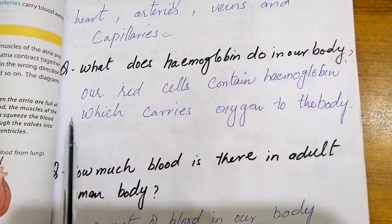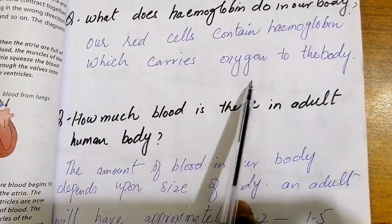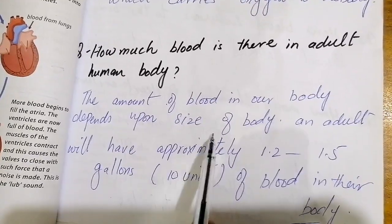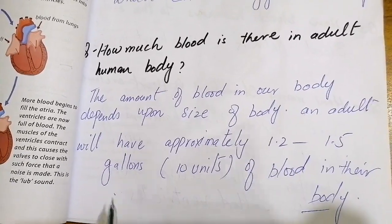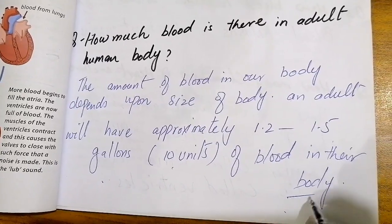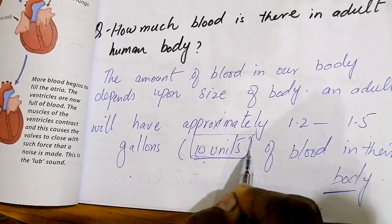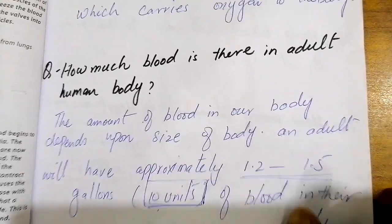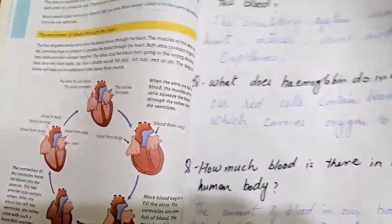What does hemoglobin do in our body? Red blood cells contain hemoglobin which carries oxygen to the body. How much blood is there in an adult human body? The amount of blood depends on the size of the body. An adult will have approximately 1.2 to 1.5 gallons, or about 10 units of blood in their body — which is sufficient for survival. Next time we will read about the movement of blood in the heart and the blood circulation system. Thanks a lot, take care. Bye-bye.